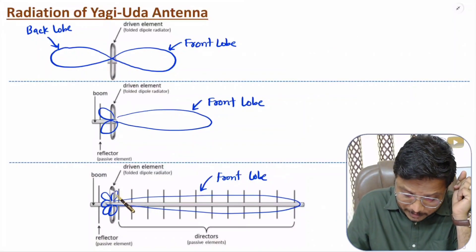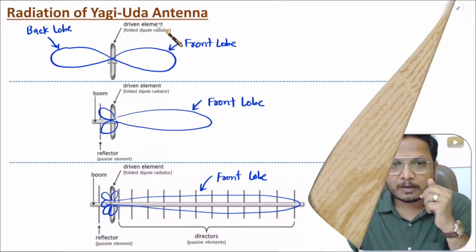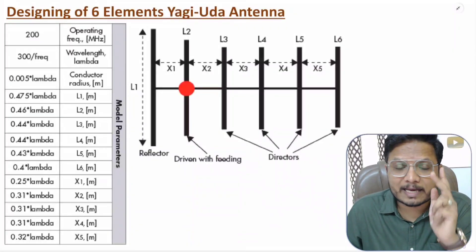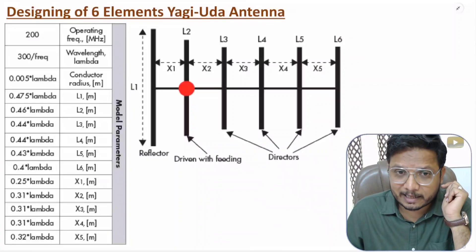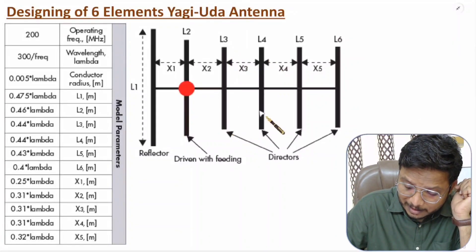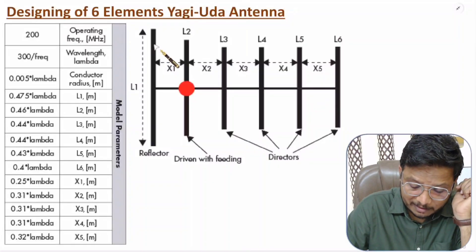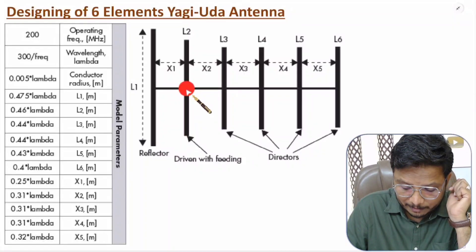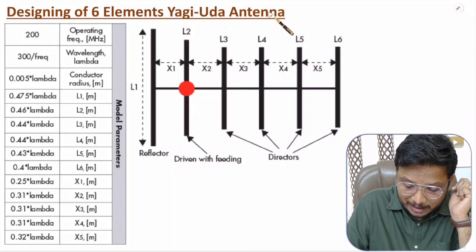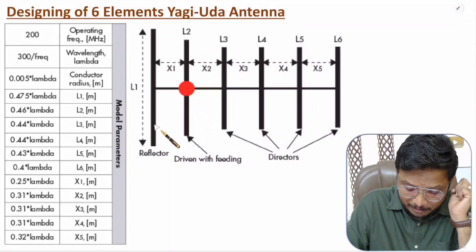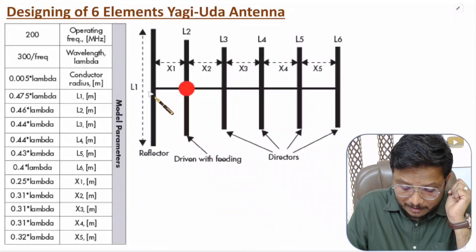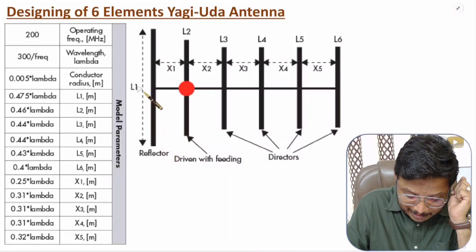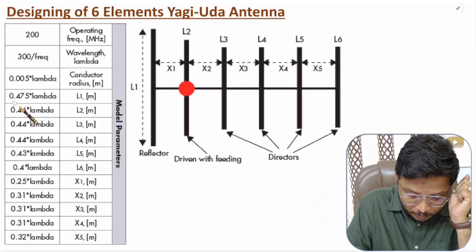Now I'll explain the designing process of this Yagi-Uda antenna. First, I'll consider a six-element Yagi-Uda antenna. In six-element Yagi-Uda antenna, we have four director elements, one reflector element, and one driven element. The driven element is connected with the power supply. This six-element Yagi-Uda antenna has a reflector element reflecting power from the back side based on impedance mismatch. The size of the reflector element is L1, which must be 0.475 lambda.